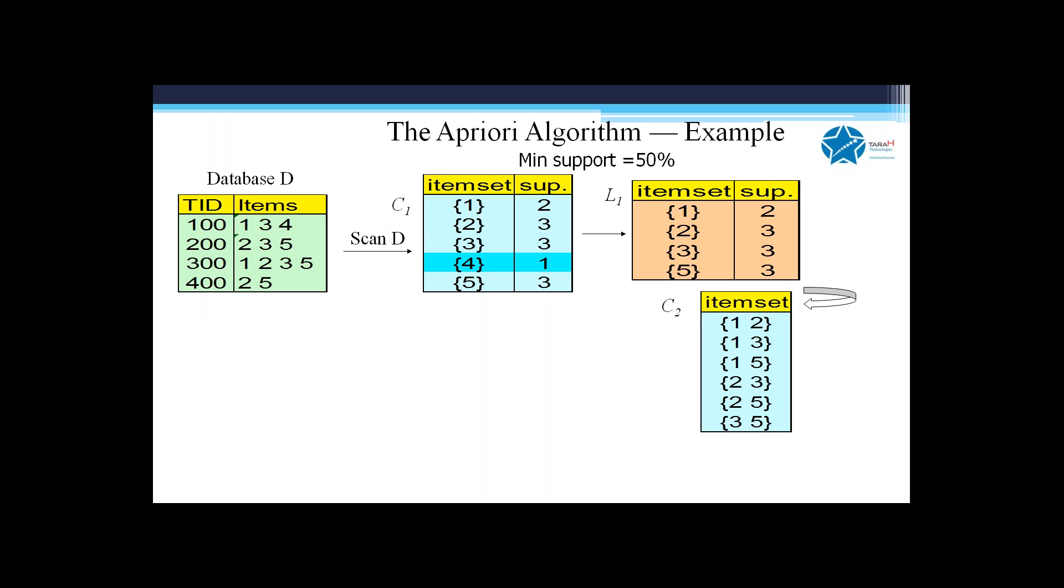Then we find the support. We find that the support of one two and one five is less than 50%, which is one, so we eliminate them.